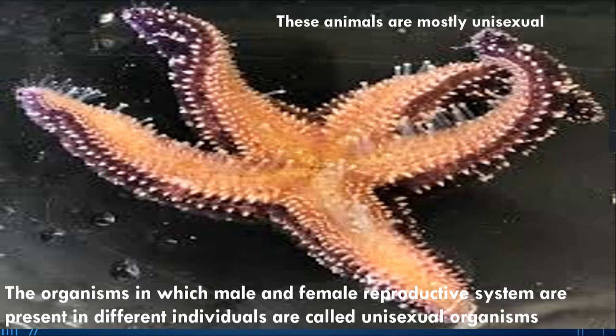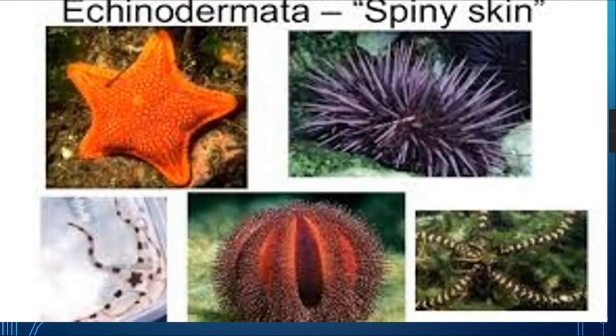The organism in which male and female reproductive systems are present in different individuals is called a unisexual organism — one organism has only one reproductive system, either male or female. These are some examples of Echinodermata which have a spiny skin.